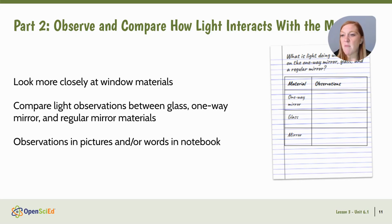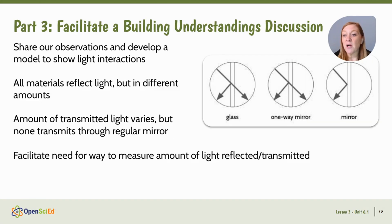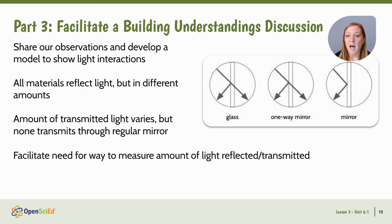In our first key moment, part two, students look more closely at the material that makes up the one-way mirror and compare it structurally to glass and regular mirrors, then shine light on those materials and compare what happens. In part three, we facilitate a building-understandings discussion where we share observations and come to agreement. Students determine there was reflection off all three materials but in different amounts, and similarly that the amount of light transmitted differs as well. The big move is that the teacher should facilitate the need for actually measuring the amount of light reflected or transmitted, to better understand the one-way mirror material.